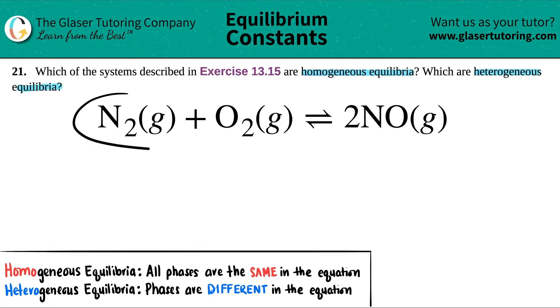So I pulled up an example. In this case, we have to find out if N2 gas plus O2 gas, which comes to equilibrium with 2NO gas, is this homogeneous or is this heterogeneous?